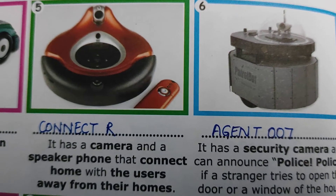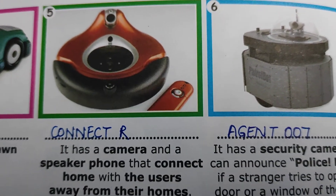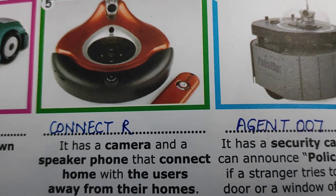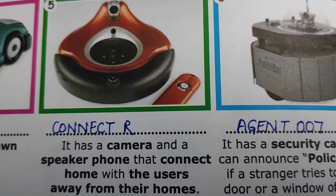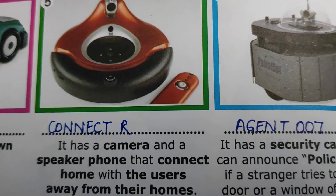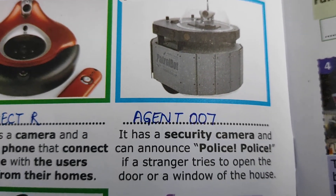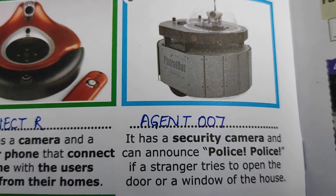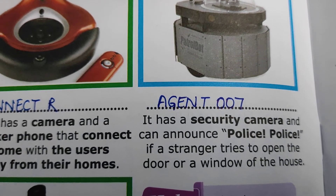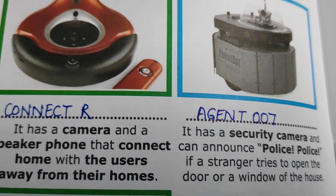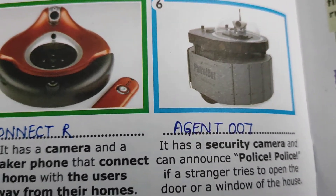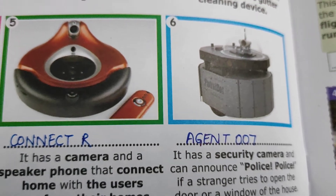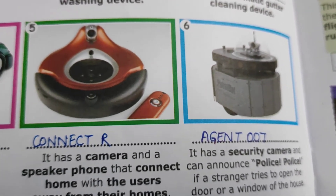The fifth one is a camera and speakerphone that connects the home with users who are away from their homes. This speaking device is known as Connector. The next is a security camera that can announce 'police, police' if a stranger tries to open the door or window of a house — it works just like a spy camera. This robot is known as Agent 007.